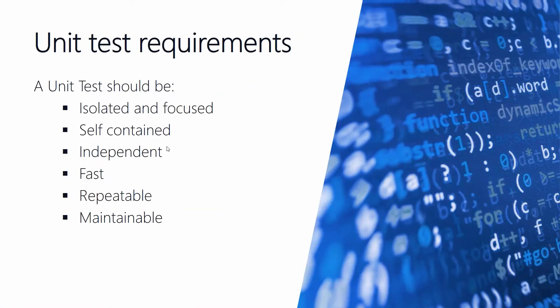Unit tests are designed to be modular and to work independently of other tests. They should be repeatable and fast, so you can run the same tests without changes and expect the same result. Unit tests should also be isolated and focused — only test the system under test and only one thing at a time. They should be self-contained, so you don't want to rely on external information or complex configuration. They should be independent of other tests so you can run them in parallel, fast so we won't skip them, repeatable given the same data, and maintainable — well documented and self-evident.